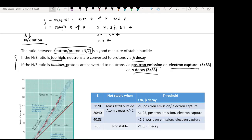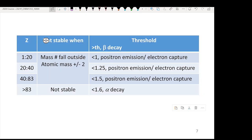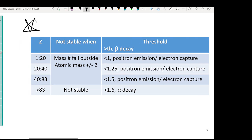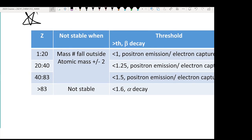So how do you define too high or too low? You use a table that breaks into four different rows based on the number of protons: 1 to 20, 20 to 40, 40 to 83, and larger than 83. You're going to have four different groups.